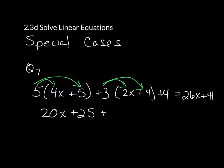The next group when you distribute it will be 3 times 2x, which leaves you 6x, and then 3 times the 4, which is plus 12, and we also have to bring down the 4.